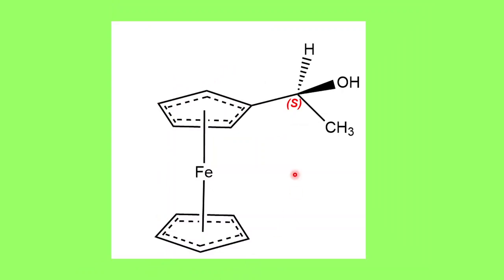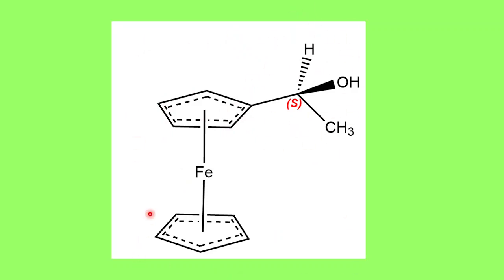This is a ferrocene system — a derivative of ferrocene where there is a chiral carbon with four different substituents attached to one of the cyclopentadienyl rings of the ferrocene. You can see this is chiral, so this will also show stereoisomerism.